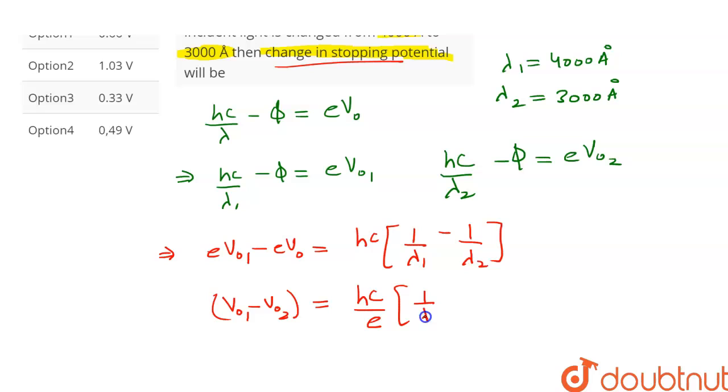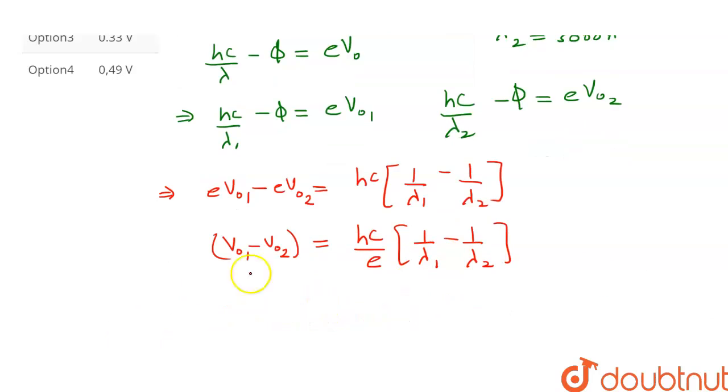We have to find the change in stopping potential, so this can be written as V0_1 minus V0_2 is equal to hc upon e into 1 upon lambda 1 minus 1 upon lambda 2. Now let's substitute the values in this equation. So this will give us V0_1 minus V0_2 is equal to h is 6.6 into 10 raised to the power minus 34, into c is 3 into 10 raised to the power 8.